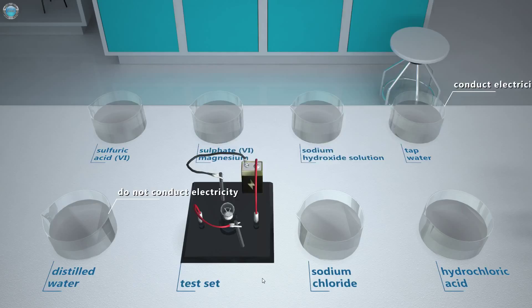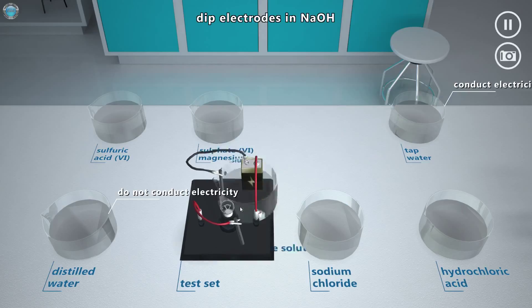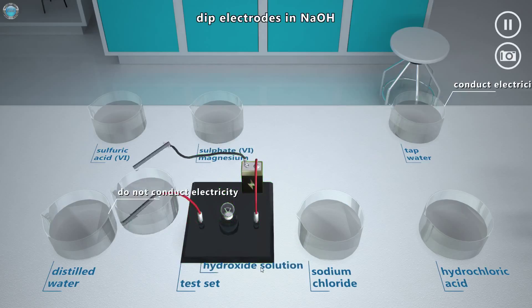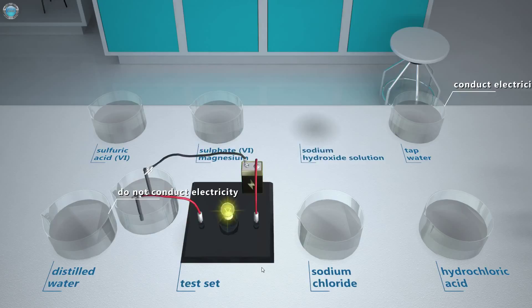Now it is time for alkaline solutions. Let's start with sodium hydroxide solution. Okay then. A sodium hydroxide solution conducts electricity. Substances which exhibit such properties are called electrolytes.